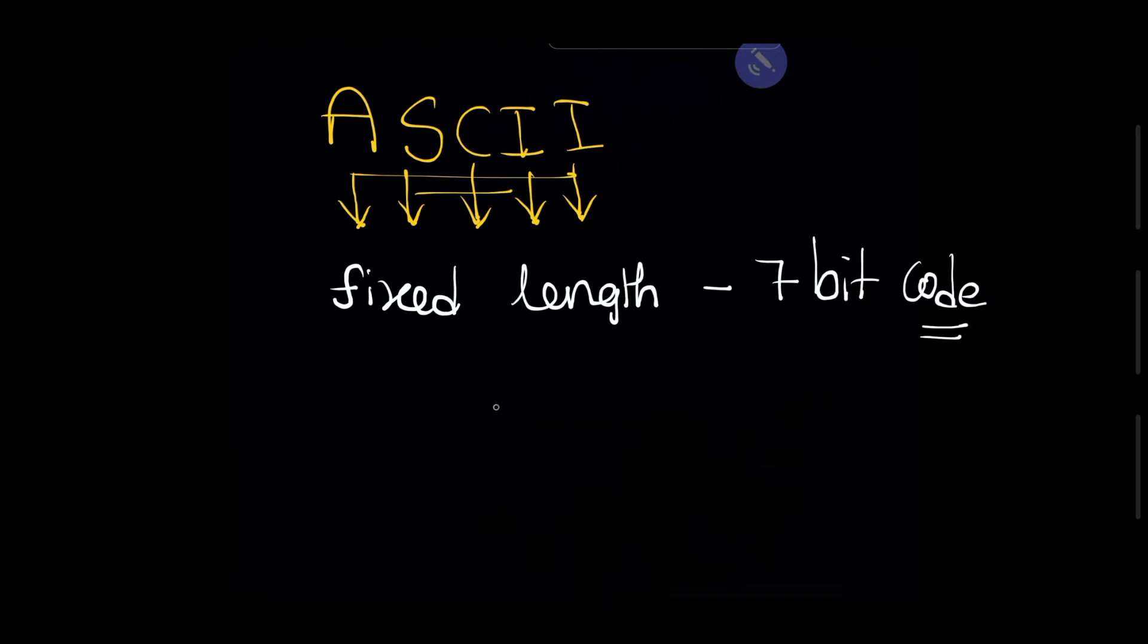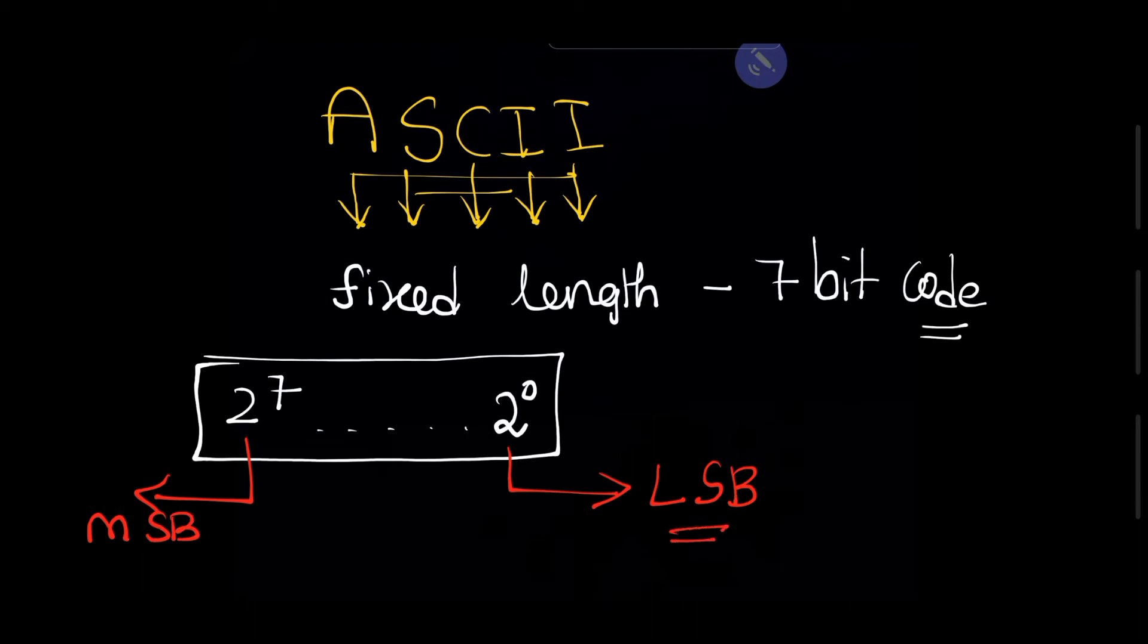This fixed length code must be 7-bit code, which means the minimum value is 2 power 0 and the maximum value is 2 power 7.